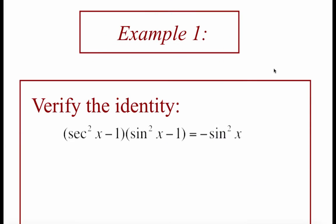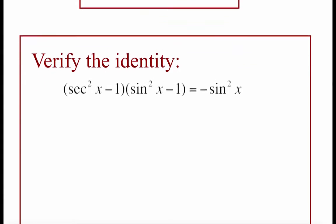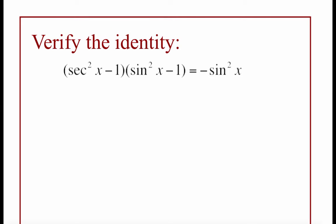In this first example, we're going to verify the identity secant squared of x minus one times sine squared of x minus one is equal to negative sine squared of x. One helpful tip: since we can't cross the equal sign, draw yourself a vertical line there to remind you that we're not allowed to cross between these sides.